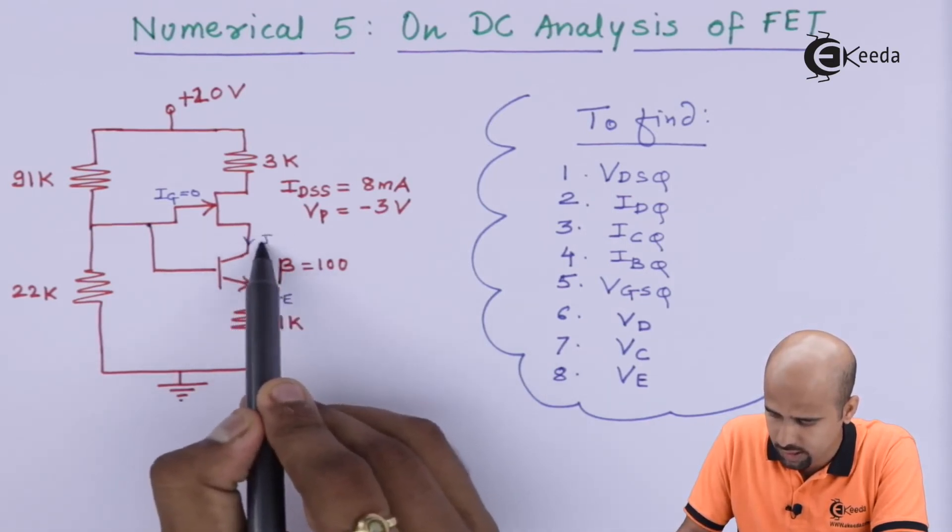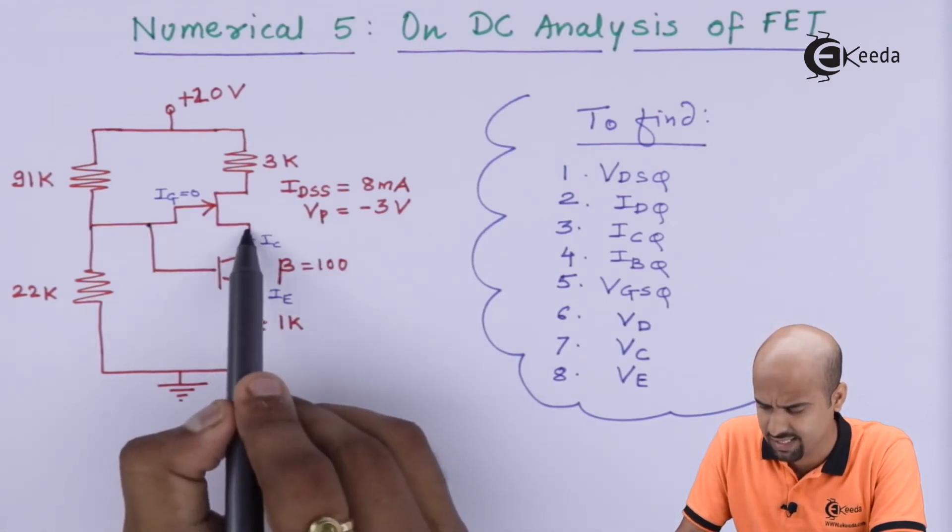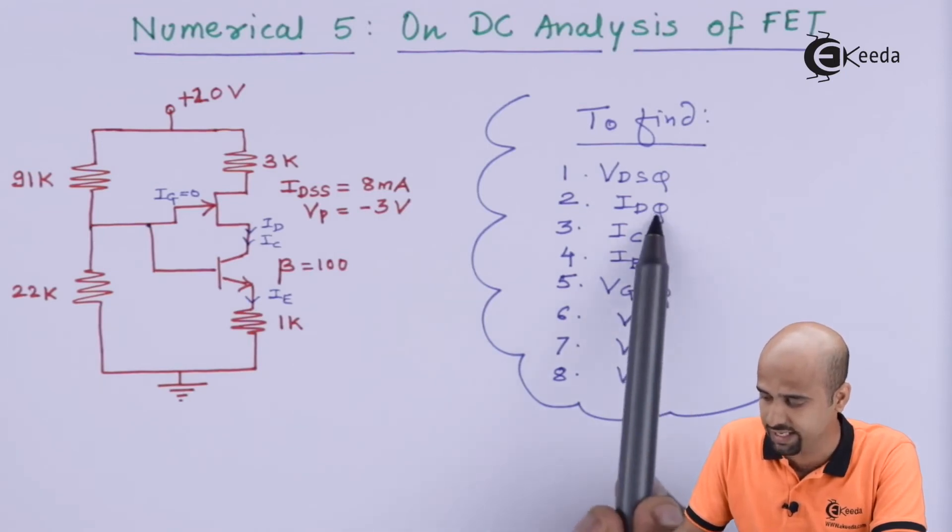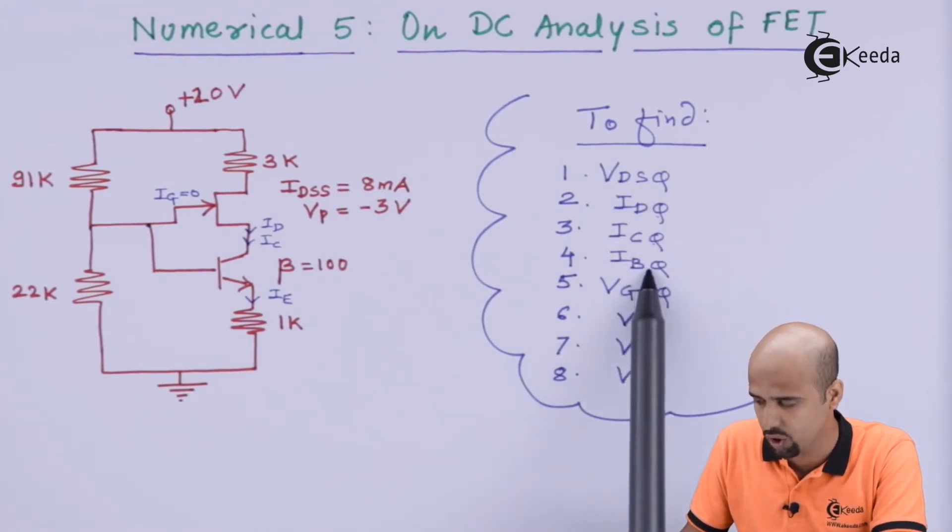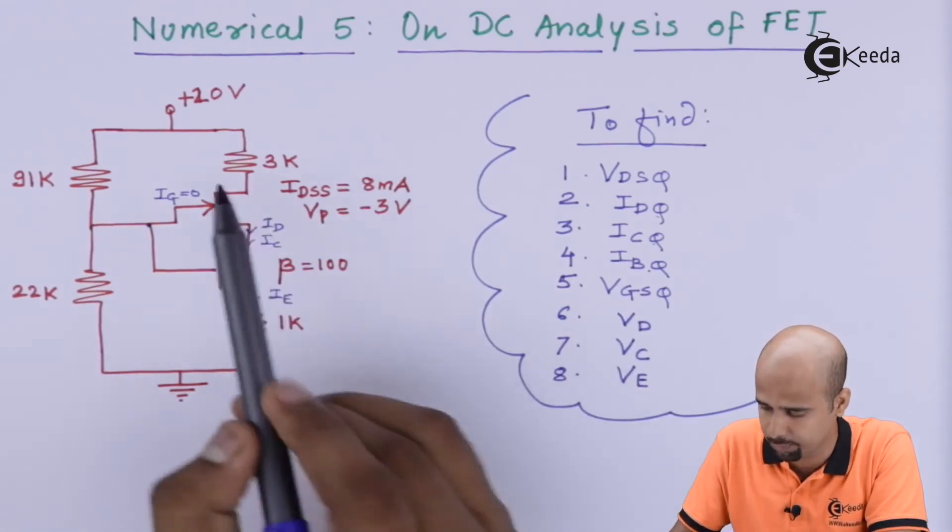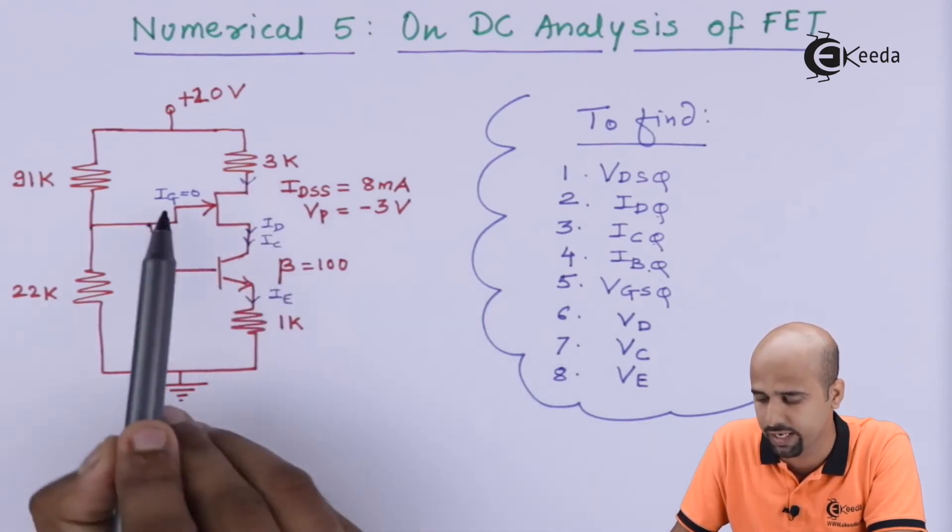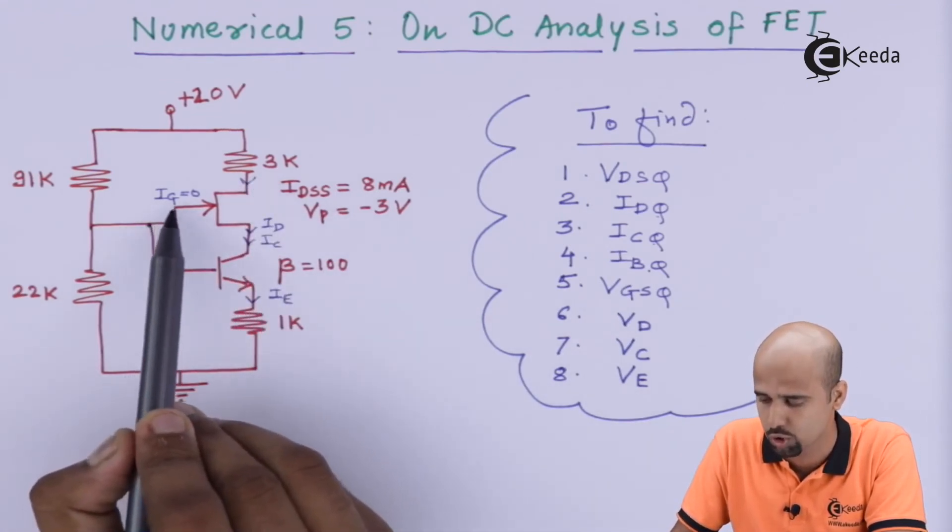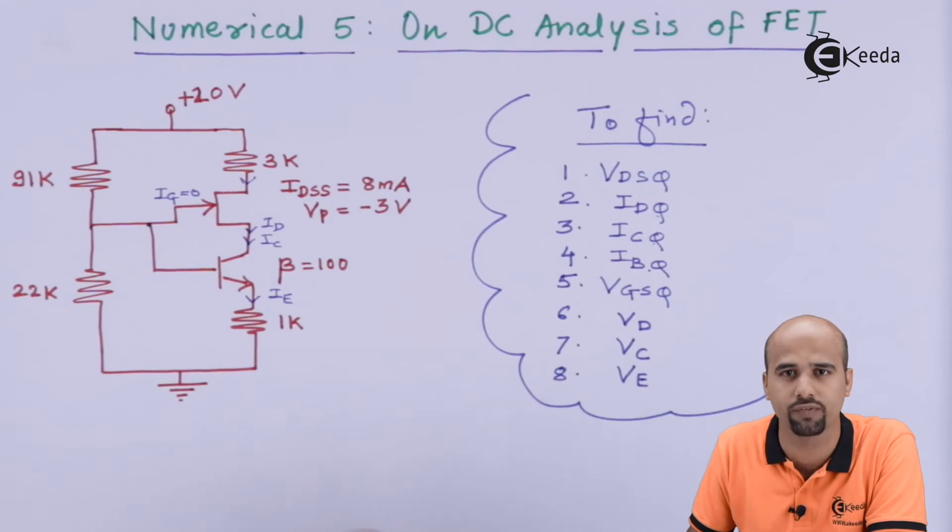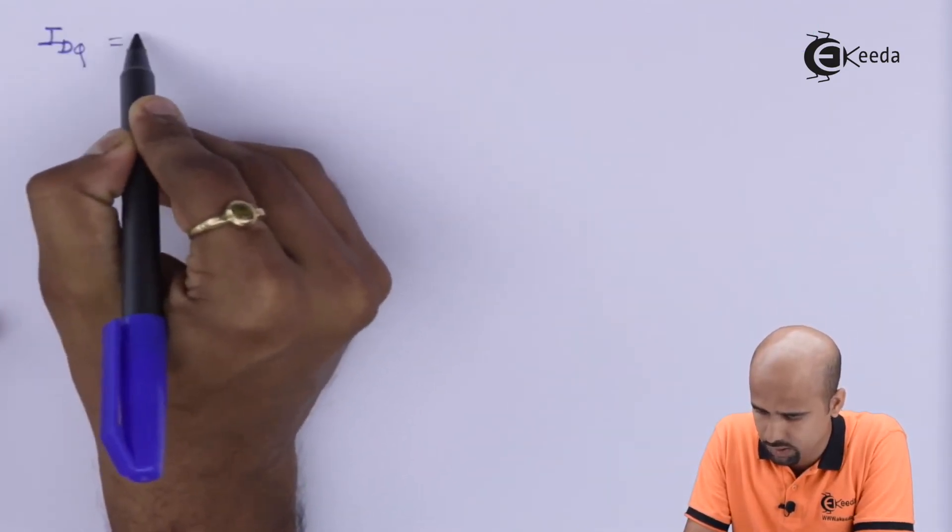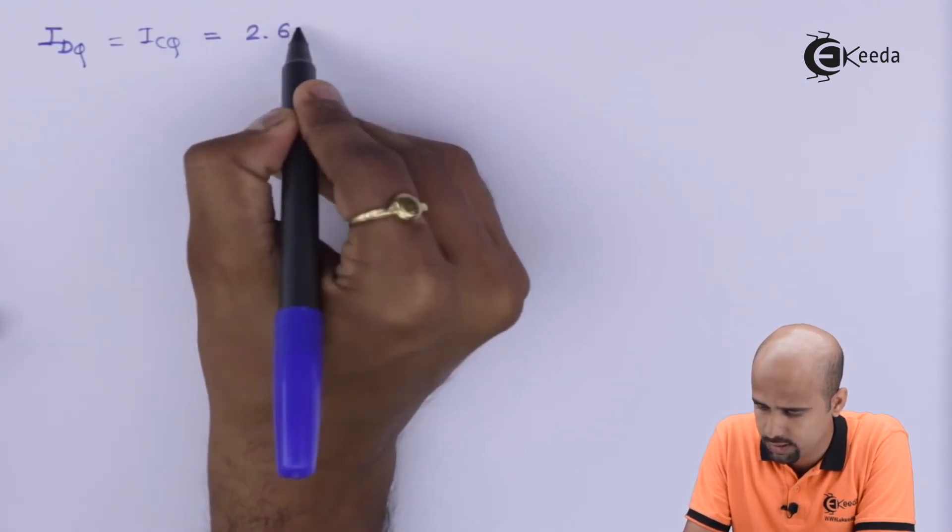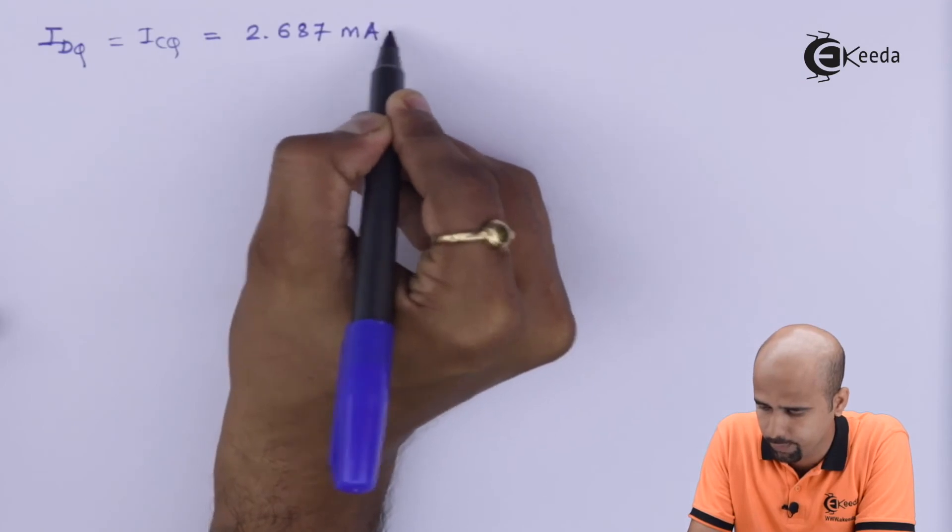Can I say that IC itself is nothing but the value of ID? Yes. So, we have got two answers. ID is equal to IC, right? IB we have already found out. IE we have already got. That is nothing but 2.713 milliampere. Here also, we will be getting the value of ID because IG is equal to 0. So, I think all is done. We are reaching almost all the values. IDQ is equal to ICQ and this is nothing but 2.687 milliampere, right?